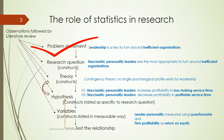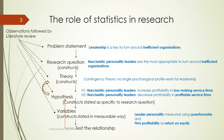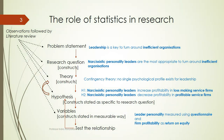Looking at a real-life situation, the problem area could be about leadership and inefficient organizations. Our specific question is whether narcissistic personality leaders can turn around inefficient organizations. Let's say we came up with a contingency theory, which says there is no single psychological profile that accounts for leadership.